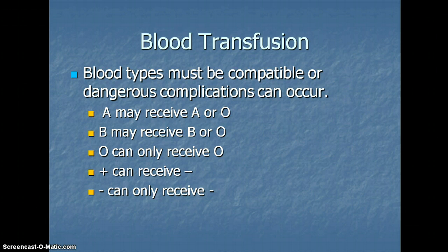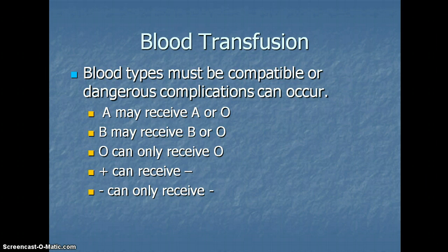We look at red blood cell blood typing when we talk about blood transfusions. Blood types must be compatible during a blood transfusion, or dangerous complications can occur. Somebody who has AB blood may receive AB blood or O blood. Somebody with B blood may receive B blood or O blood. O blood can only receive O blood. AB blood can receive AB or O. Someone with positive blood can receive positive or negative, but somebody with negative blood can only receive negative blood.